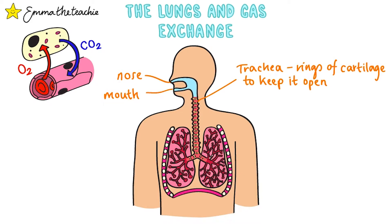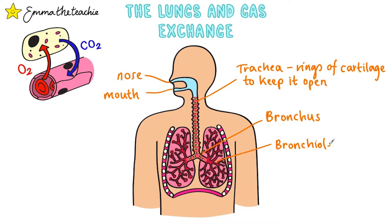The trachea then branches into the bronchi — or bronchus for singular — which then itself branches into bronchioles. At the end of the bronchioles we've got tiny little air sacs called the alveoli. We'll look at these more in a second.